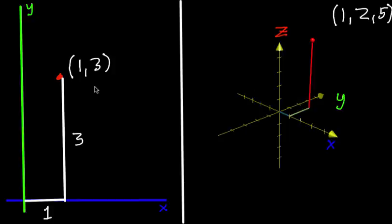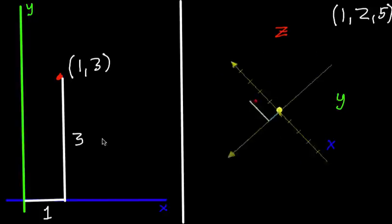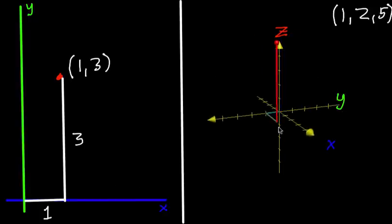So there's another context, though, where pairs of numbers come up. And that would be vectors. So a vector, you typically represent it with an arrow.